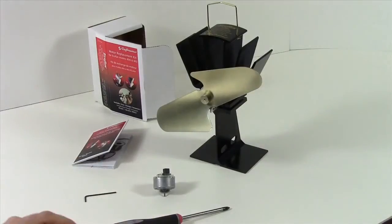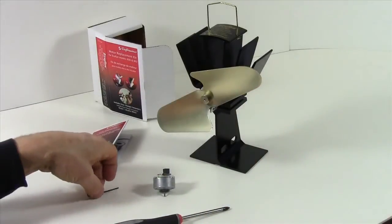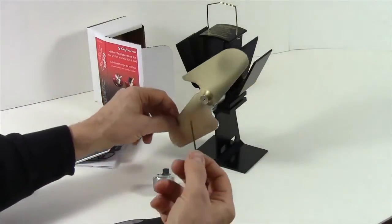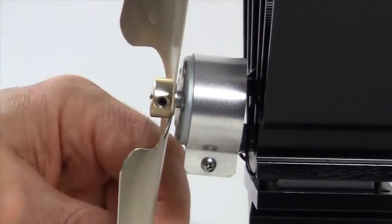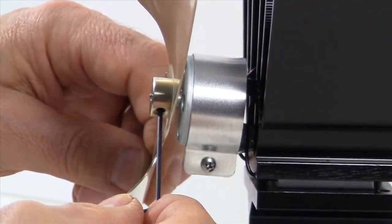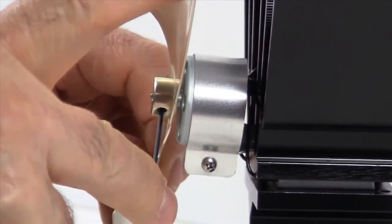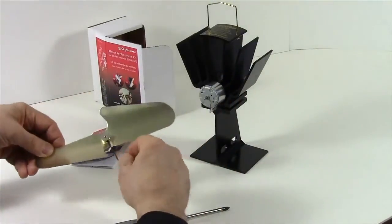The first step is going to be to remove the blade from the EcoFan. We're going to use our allen key and insert it into this tiny hole here on the blade. We turn the set screw counterclockwise to loosen it and now we can simply slide the blade off the shaft.